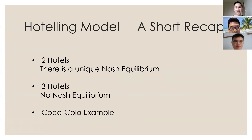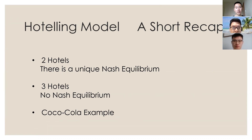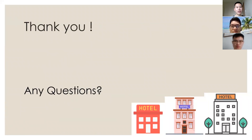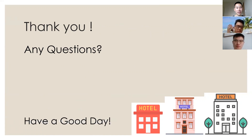Now we have reached the end of this lecture. A quick recap: we talked about two hotels — and the conclusion is there is a unique Nash equilibrium. For three hotels, unfortunately there is no Nash equilibrium. Finally, we looked at the Coca-Cola versus Pepsi example and found the correct sweetness for Pepsi in order to get more customers. Thank you. Are there any questions? No questions. Thank you, have a good day.